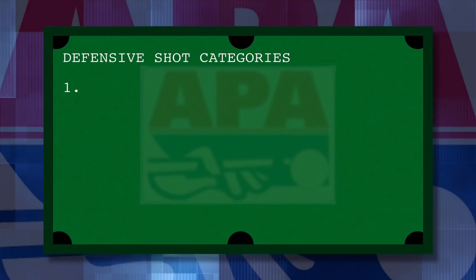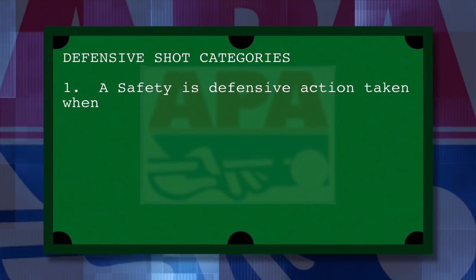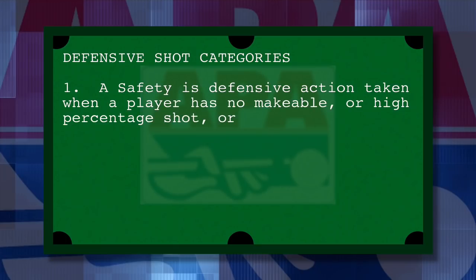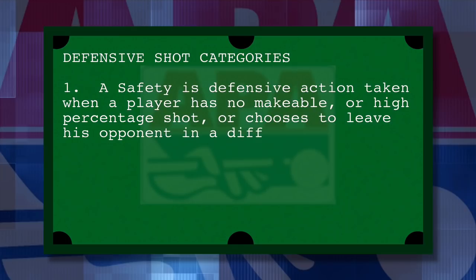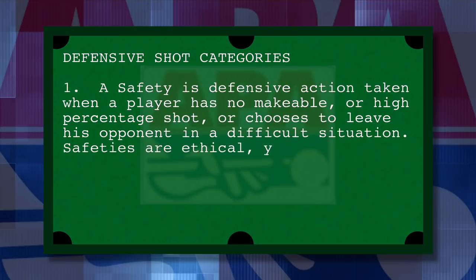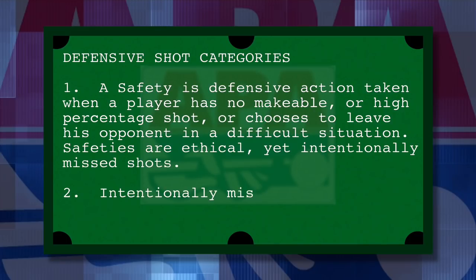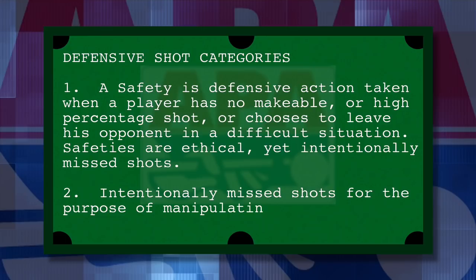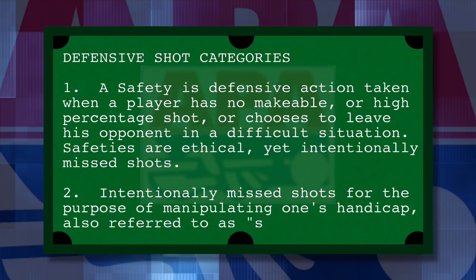Defensive shots fall into two basic categories. The first category is safeties. A safety is defensive action taken when a player has no makeable or high percentage shot, or chooses to leave his opponent in a difficult situation. Safeties are perfectly ethical but are intentional misses nevertheless. The second category is intentionally missed shots for the purpose of manipulating one's handicap, also referred to as sandbagging.